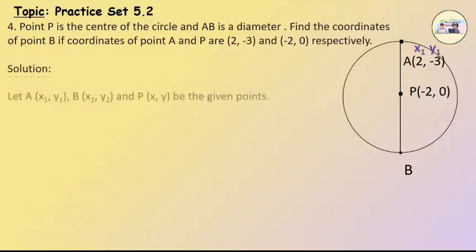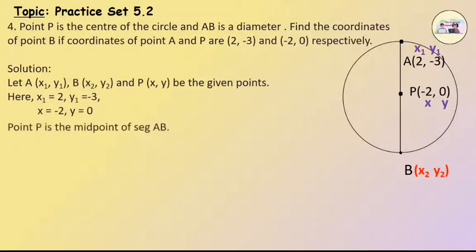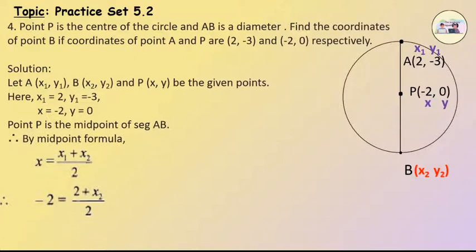Solution: Let A be (x1, y1) and P be the given points. Here x1 = 2, y1 = -3, x = -2, y = 0. In a circle, the centre is the midpoint of the diameter. Therefore, by the midpoint formula, x = (x1 + x2)/2. Therefore, -2 = (2 + x2)/2.